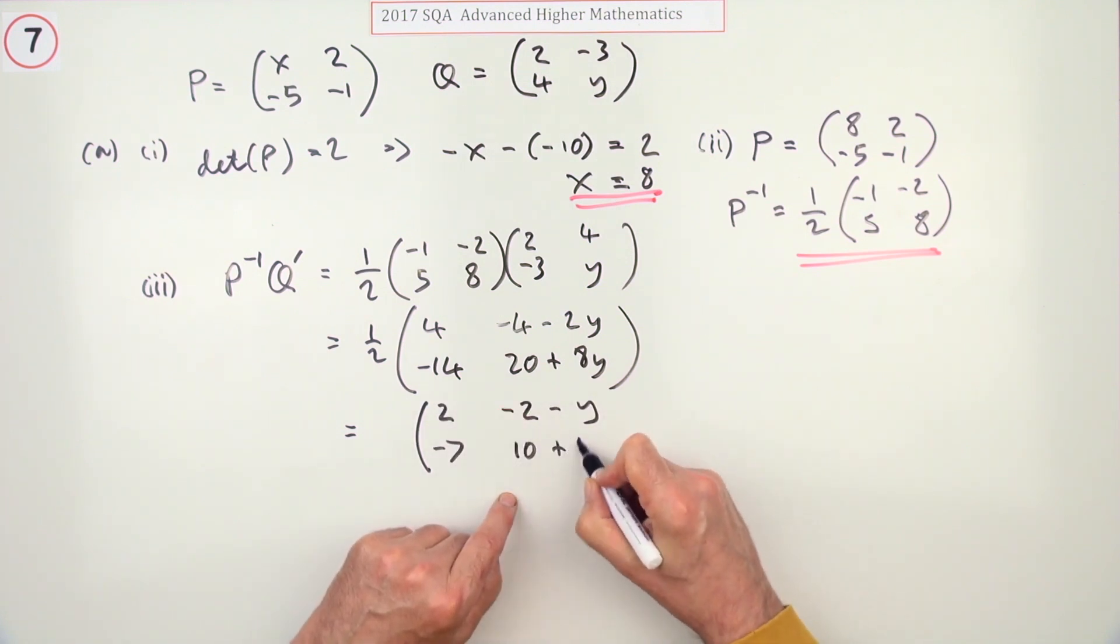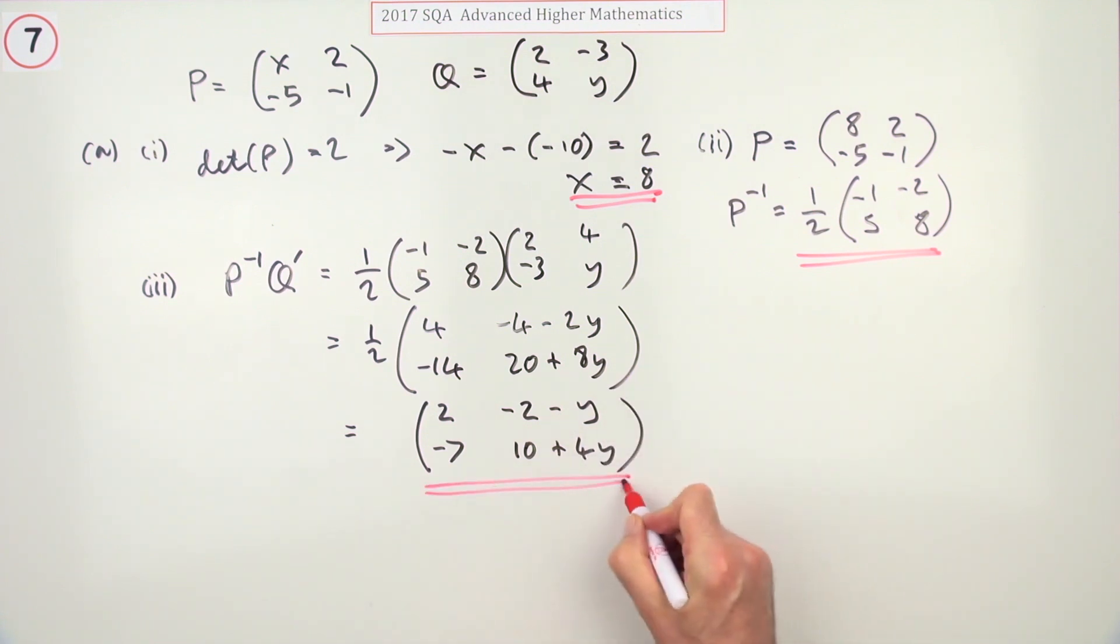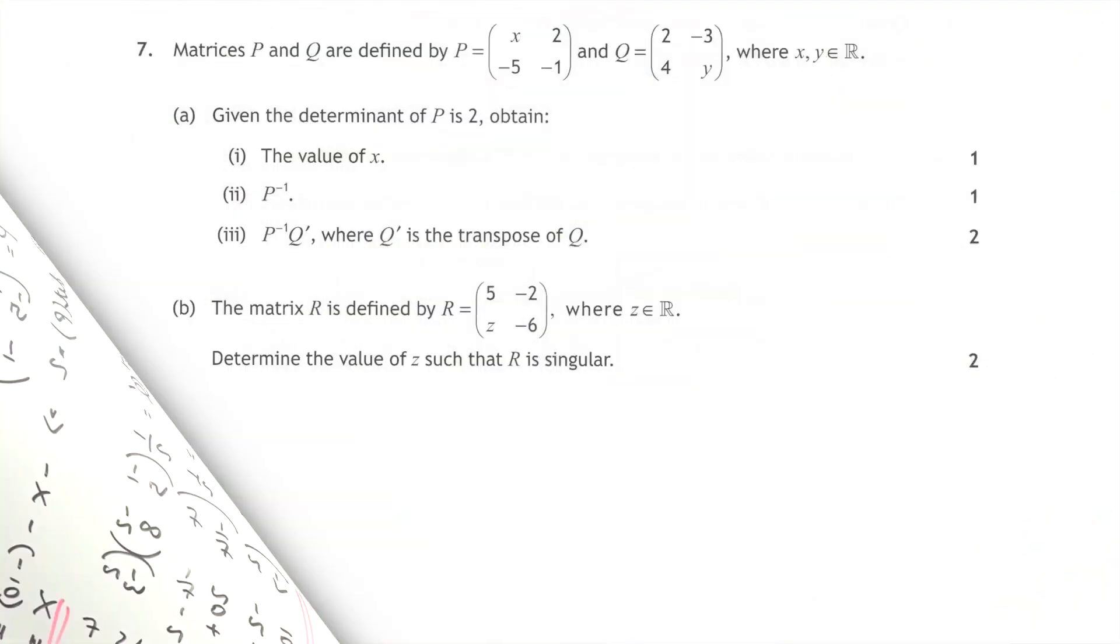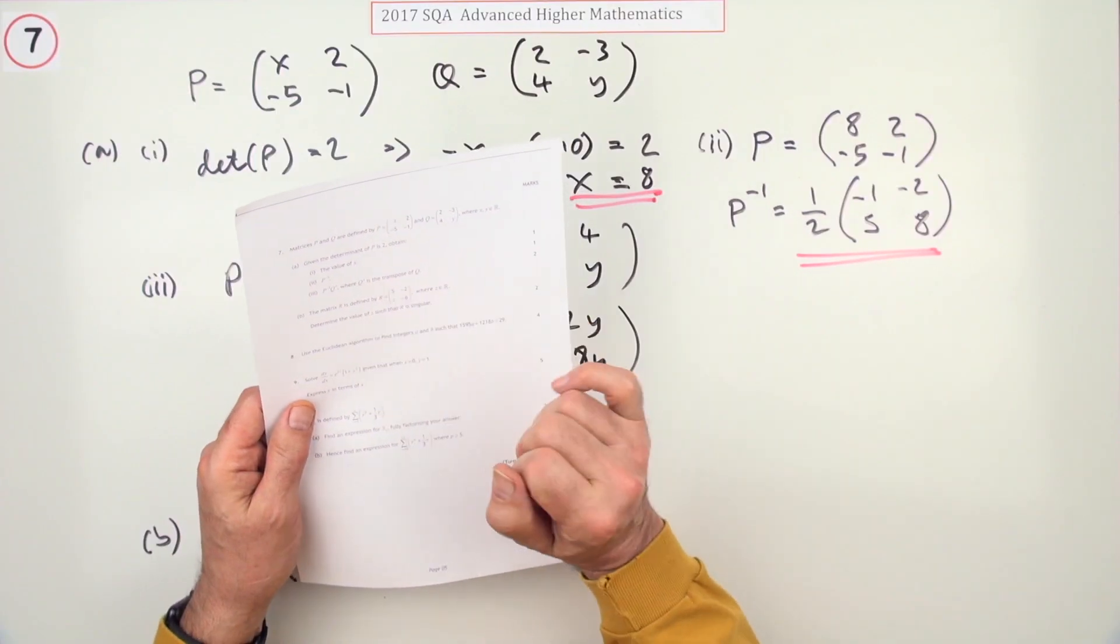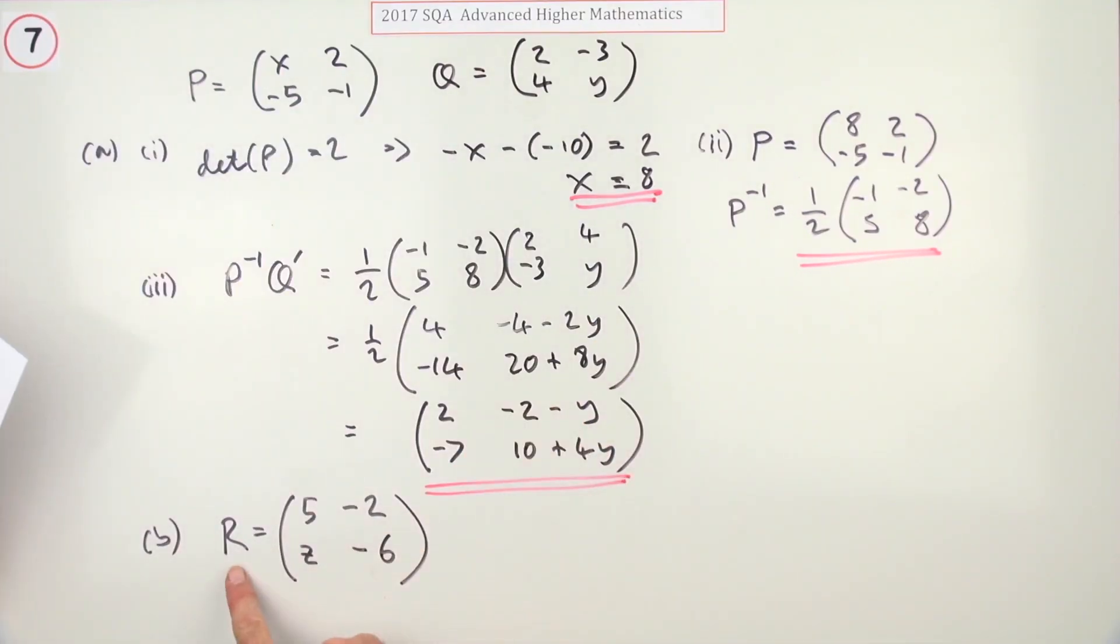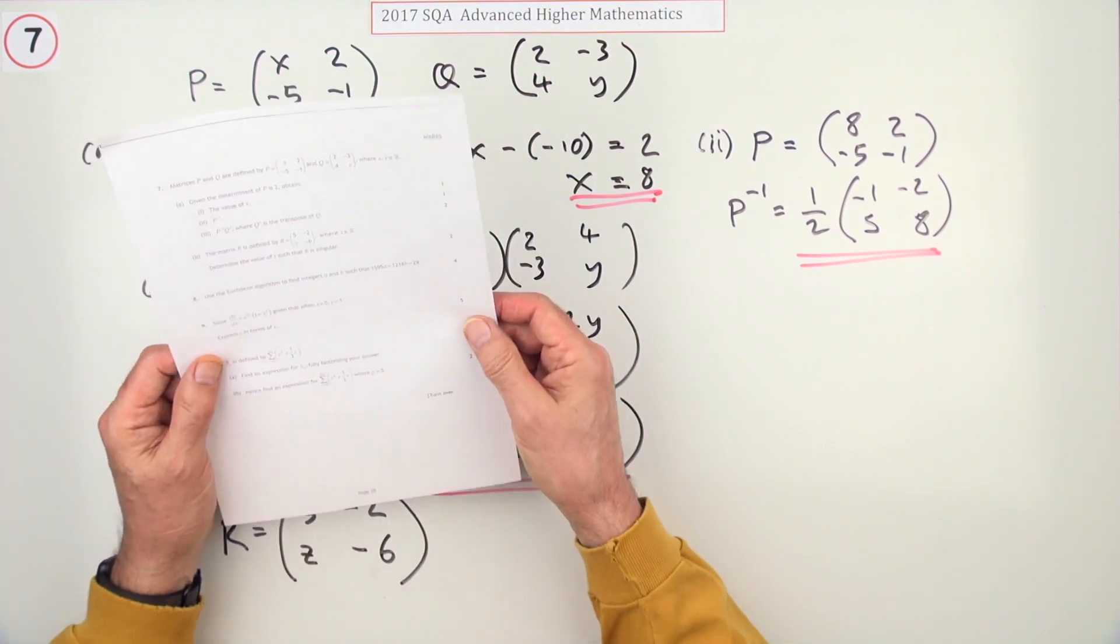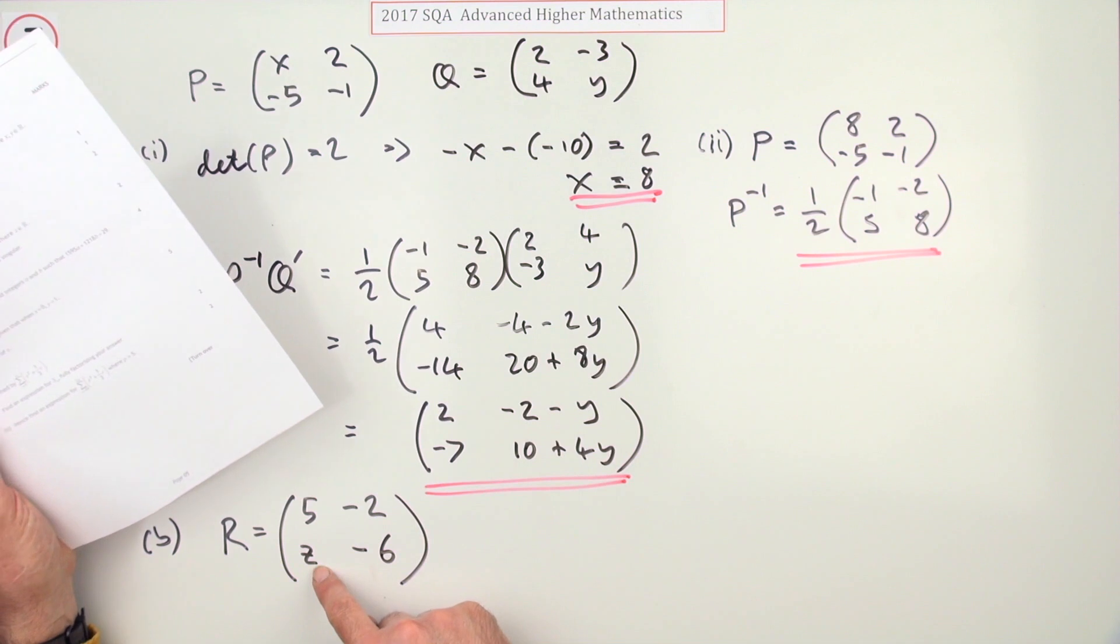Part B for another two marks gives you this third matrix R which has a z in it. What's the value of z such that R is singular? Singular means the determinant of R should equal zero, just like question one part a.